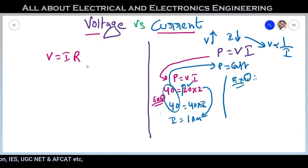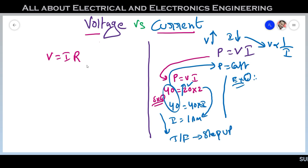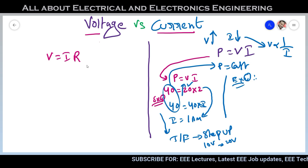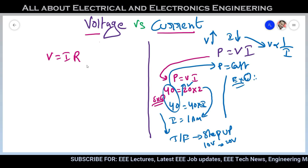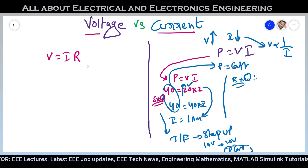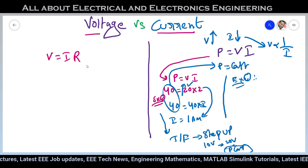You can see this in transformers. In a step-up transformer, voltage increases — for example from 10V to 20V. If voltage is increasing, current will be decreasing. That's why a step-up voltage transformer is also known as a step-down current transformer: voltage increases, current decreases, but power remains constant. So if power is constant, then voltage is inversely proportional to current.